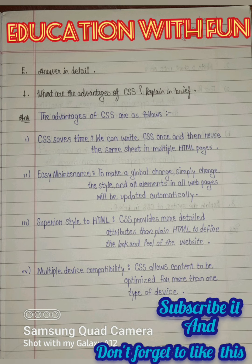What are the advantages of CSS? Explain in brief. The advantages of CSS are as follows. CSS saves time — we can write CSS once and then reuse the same sheet in multiple HTML pages. Easy maintenance — to make a global change, simply change the style and all elements in all web pages will be updated automatically.